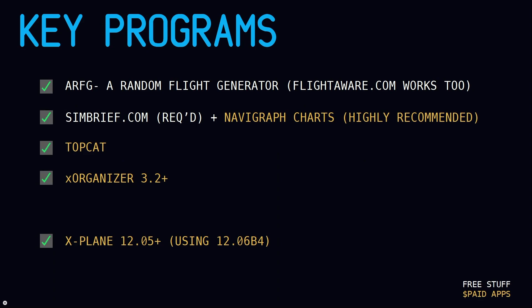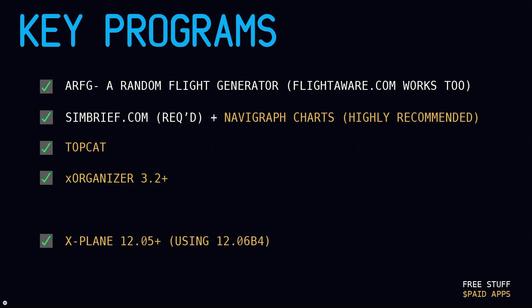Topcat — this is a very old program, still available on SimMarket. It's a great flight weight and balance and takeoff and landing calculator. It does have the 777 in it. It came from the PMDG FSx days, but it's still usable. I'll show you why and how I use that.